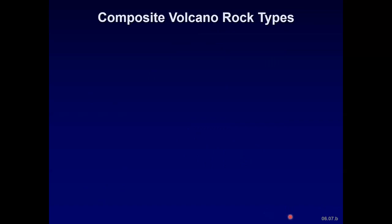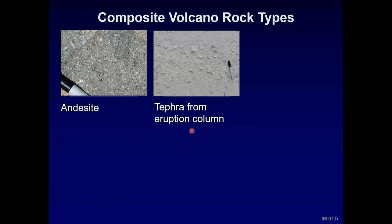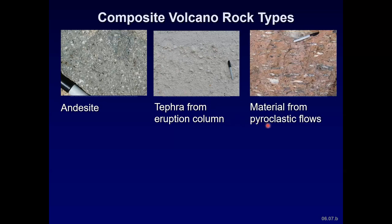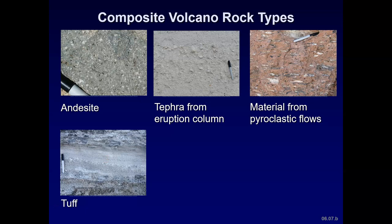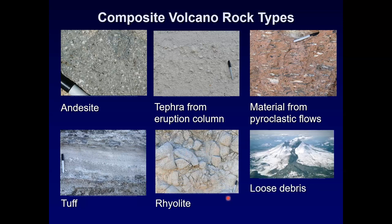Rock types associated with composite volcanoes include andesite — this sample is from Mount Hood in Oregon — and tephra from the eruption column, which is an ashy-looking rock mixed with volcanic ash and lithified material. Material from pyroclastic flows, tuff, rhyolite, and basaltic rock are also associated types, along with loose debris.